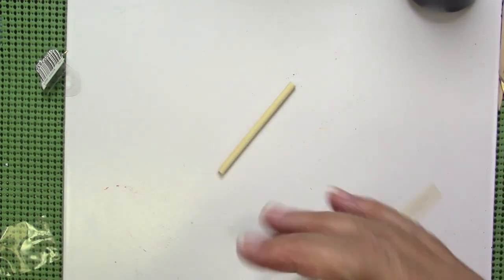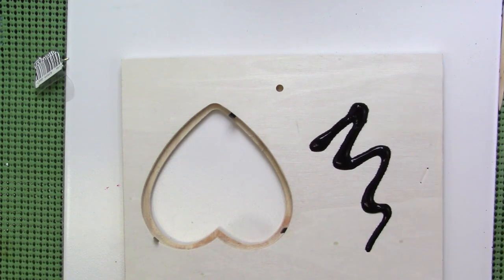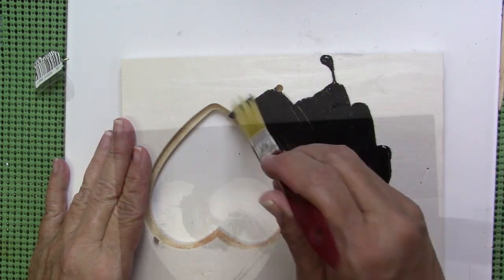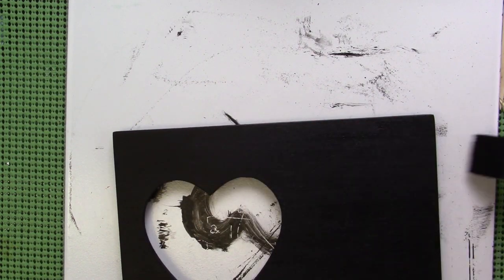So I'm using some 220 grit sandpaper and I'm just going over it. Once I'm done sanding, I will use a damp paper towel to take off the dust. Then I'll apply the black chalk paint all around the front and the back of the frame.